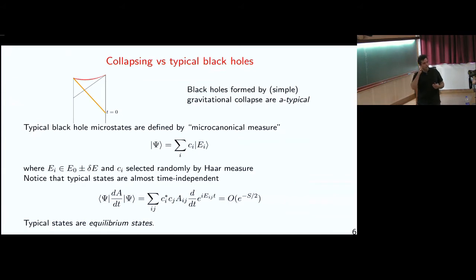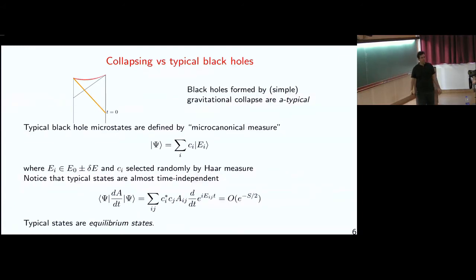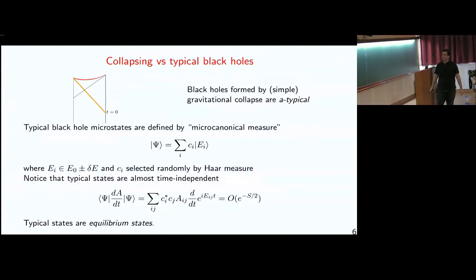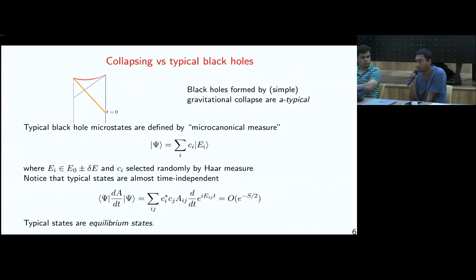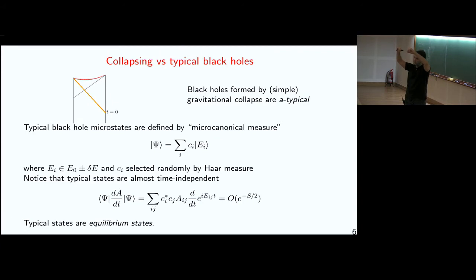You can select E_0 to be whatever you like, but you should take it high enough so that you are in the regime dominated by big black holes in AdS — a number of order N squared times some order-one number. Regarding gravitational collapse being atypical: I mean collapsing a simple shell of matter, or throwing something from the boundary in a short amount of time. If you try to form a black hole by gravitational collapse in a very complicated way — throwing in various particles over a very long period of time, also removing particles and adding more — it may be possible to approach typical states. But I'm talking about more conventional standard gravitational collapse.